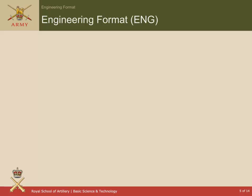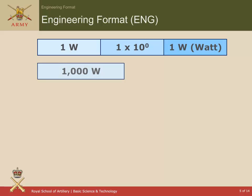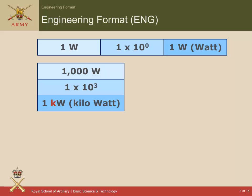Engineering format is very good when dealing with very large numbers and very small numbers, because it forces you to write the number as a value between 1 and 999, maybe with a decimal part, but then multiplied by 10 raised to a power. So we could have 1 watt by itself — no times 10 to the power there. We could have 1000 watts, which is equivalent to 1 times 10 to the power 3, and we call that a kilowatt — so 1 kilowatt.